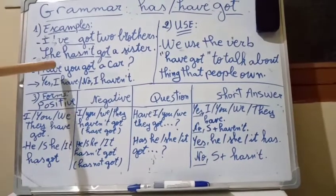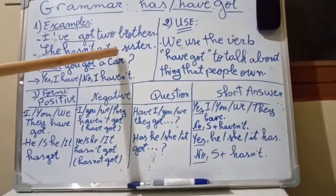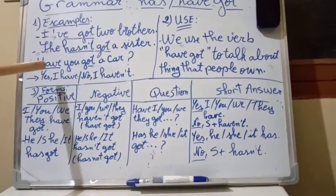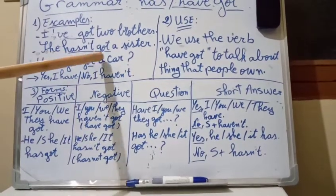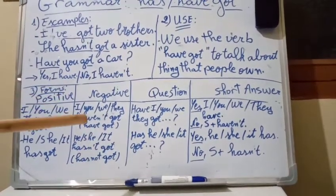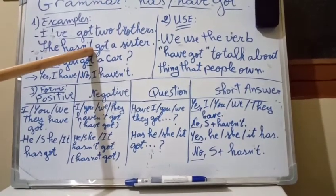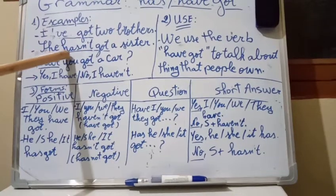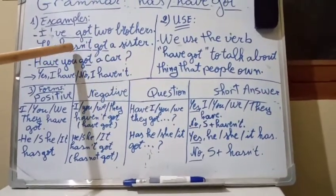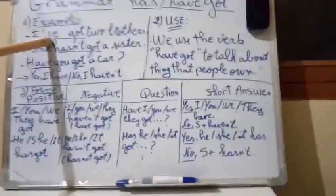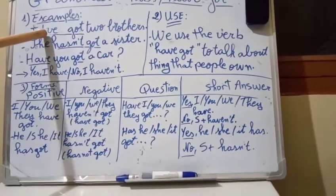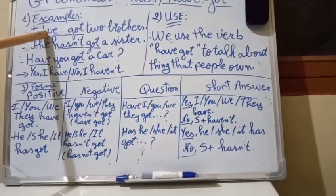In the second sentence we have: 'She hasn't got a sister.' The subject is 'she' and the verb is 'hasn't got.' This sentence is in the negative form because we have the apostrophe-t, which means 'not.' We can say 'she has not got a sister' or 'she hasn't got a sister.' The apostrophe form is the short form of 'have got.'